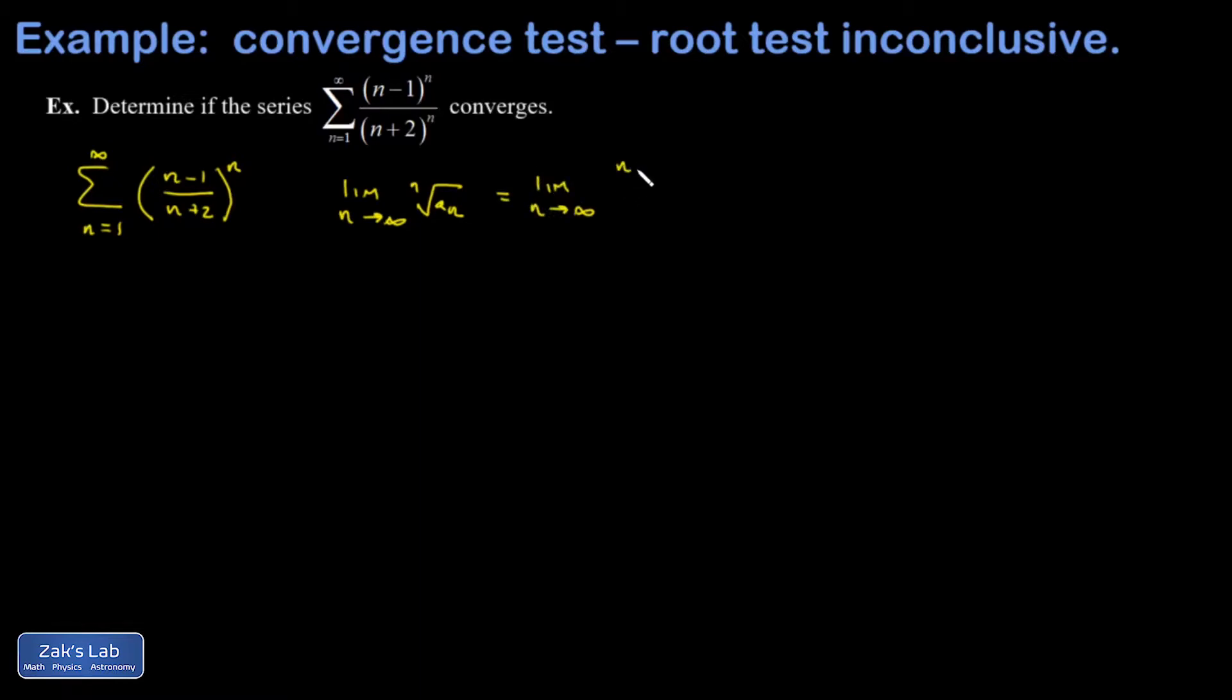The nth root undoes the nth power, and I have this simple limit of a rational function. The highest power of n dominates the numerator and denominator. You could divide the top and bottom by n. This reduces to 1, and I end up with 1 for my limit. That's the case where the root test is inconclusive, so that didn't help at all.